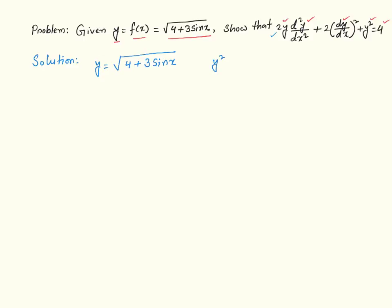So, if I square both sides, I am going to get y square on the left, and on the right hand side the square and square root are going to cancel out, leaving me with 4 plus 3 sine of x.